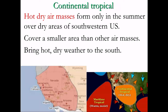For continental tropical, it forms over land and is hot. Continental tropical is a hot, dry air mass. These generally form in the summertime in the south and southwestern U.S. For the North American continent, the continental tropical air mass is actually the smallest of all the air masses, because it only forms in the southwest United States and over parts of Mexico. If a continental tropical air mass moves into your area, you generally have hot, dry weather — and if you live in the southwest, you definitely know there is hot, dry weather there most of the year.